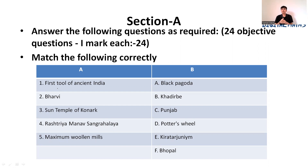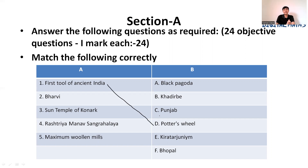The first question in Section A is Match the Following. The first entry is the first tool of ancient India. The answer for the first rule of ancient India is potter wheel. The answer for the second one is Kiritar Juniyam.